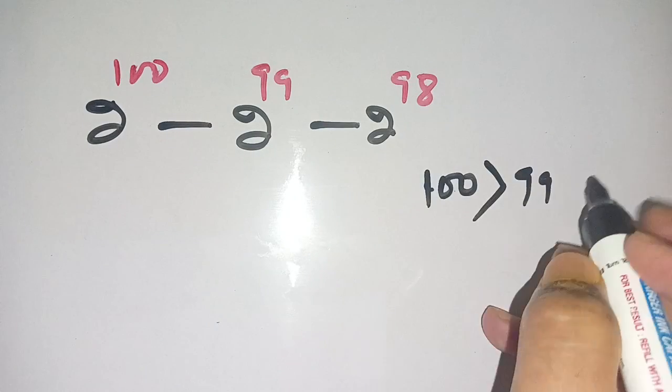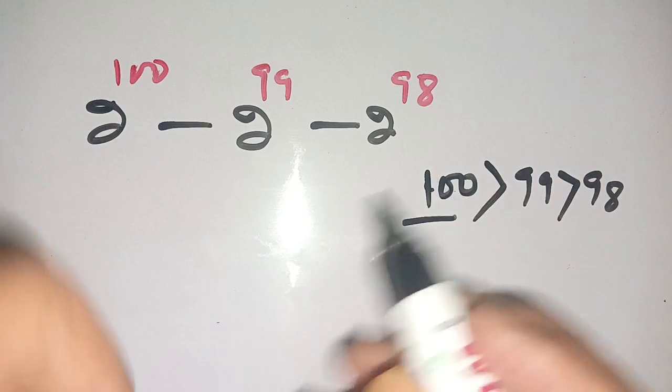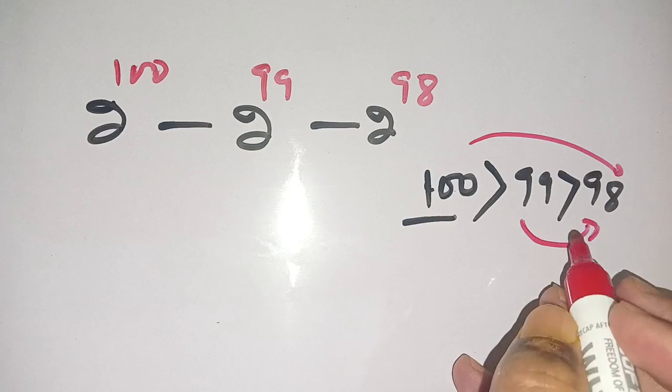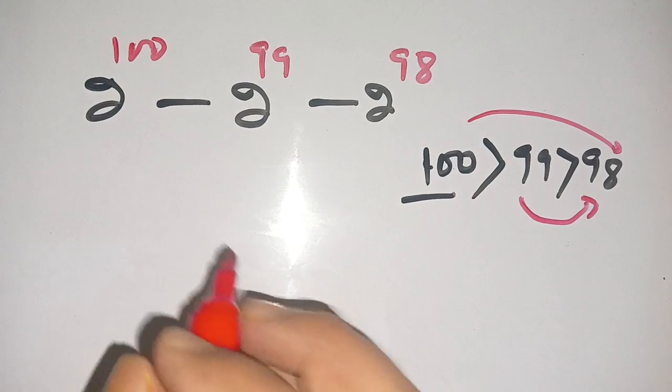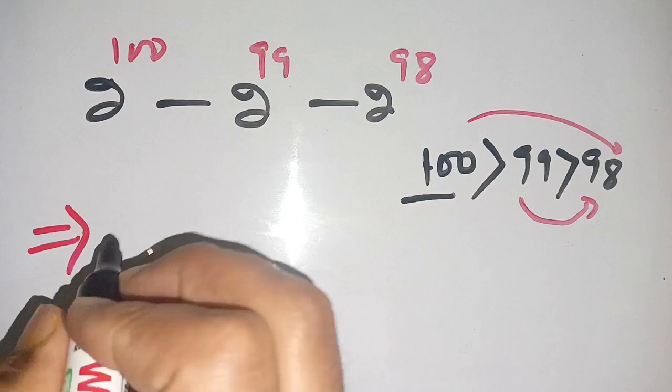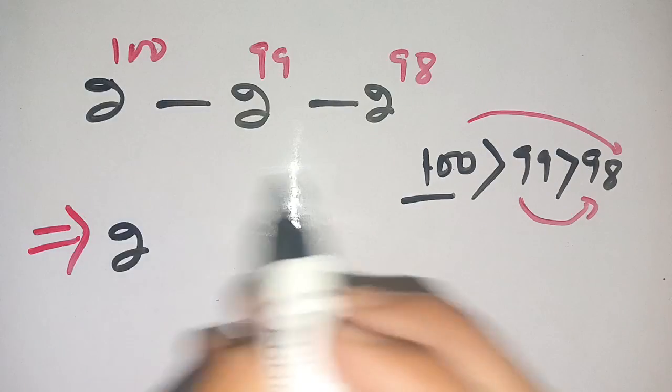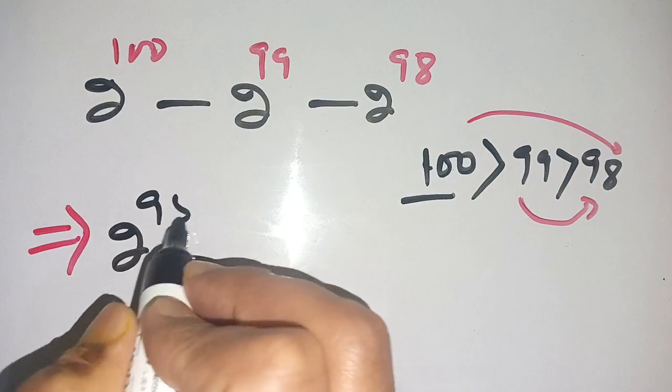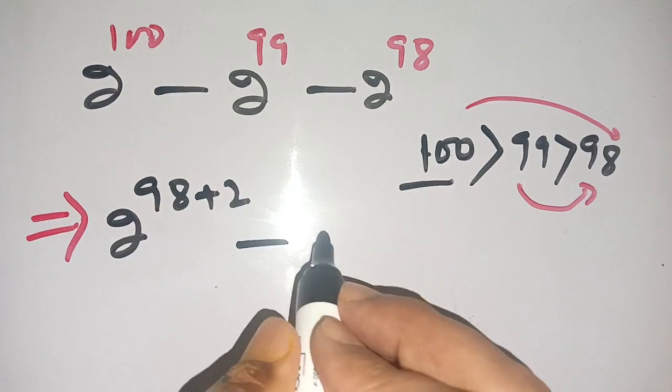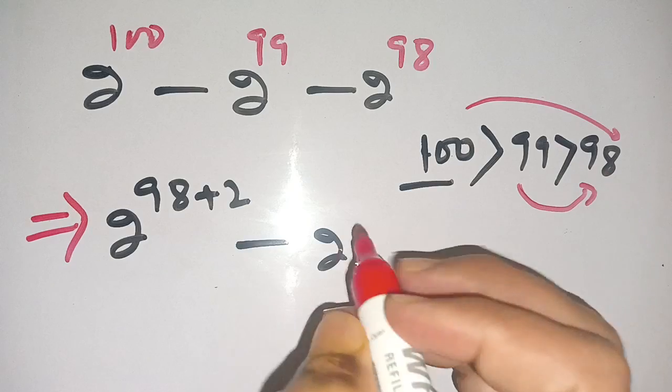Thus 100 can be written in terms of 98, and 99 is also written in terms of 98. Thus we can write 2^100 in terms of 98. It becomes 2^(98+2), minus 2^99 can be written in terms of 98 as 2^(98+1), minus 2^98.